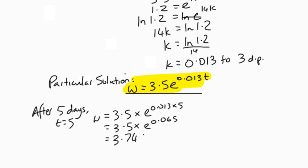That's 0.065. Just give that into your calculator and we're going to get 3.74 to 2 decimal places. What does that mean? That's the weight of the baby in kilograms. The baby weighed 3.74 kilograms after five days.